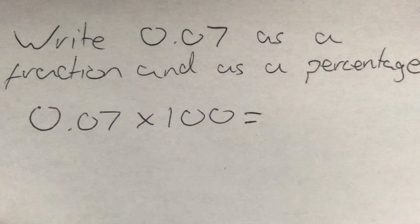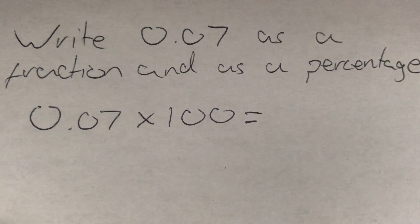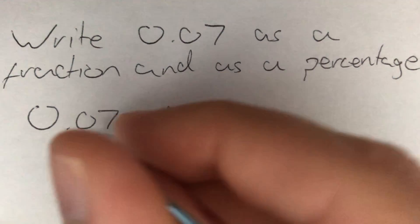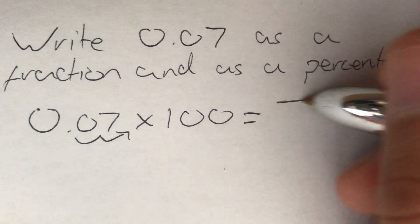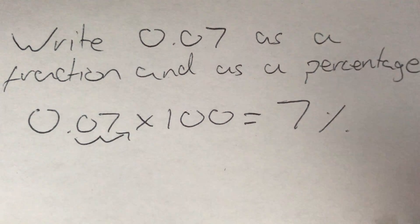So multiplying 0.07 by 100, we move this decimal place twice to the right. So once, twice to the right, so our answer is going to be 7%.